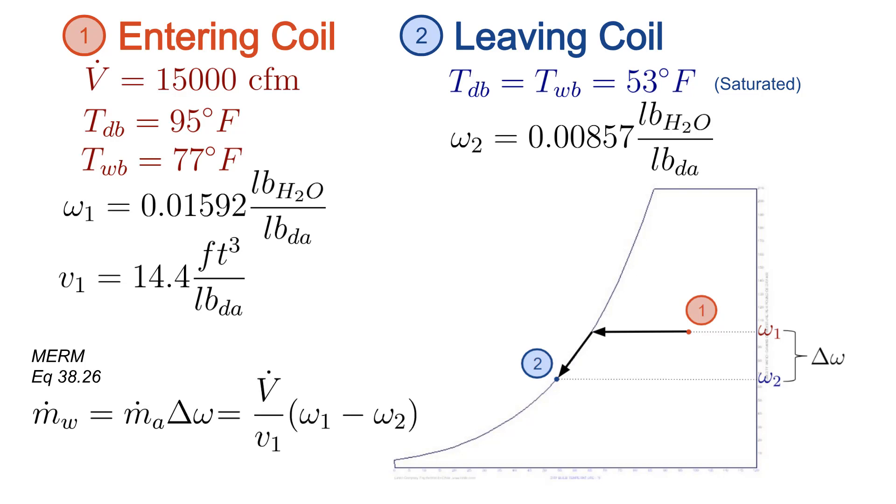Also, we don't actually know what the mass flow rate of air is, but we do know the volume flow rate, which we can divide by the specific volume for state 1. So we'll rearrange the equation as shown here. And we can also expand the delta between the humidity ratios as shown. So let's jump to a clean slide and plug it all in.